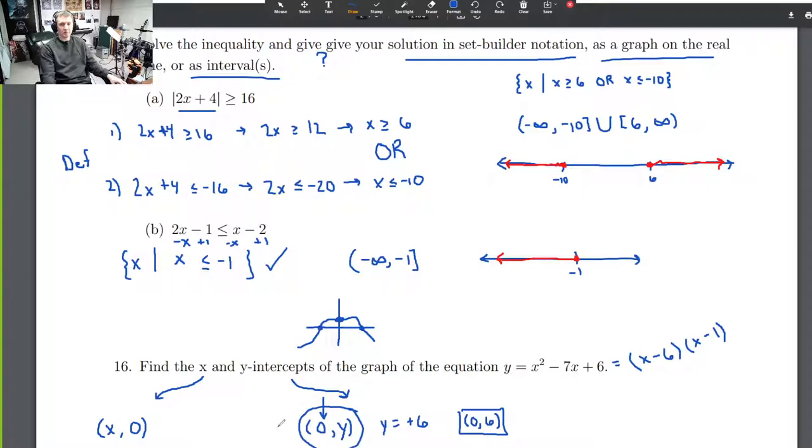To find x-intercepts, you plug in 0 for y. That's why I factored this before. When you plug in 0 for y, we get 0 = (x - 6)(x - 1). That's easier to solve than the original, because now we know each of these factors can be 0 to make a true statement. So we get x = 6 for the first one, or x = 1 for the second one. That gives us our two x-intercepts: (6, 0) and (1, 0). And that's it.